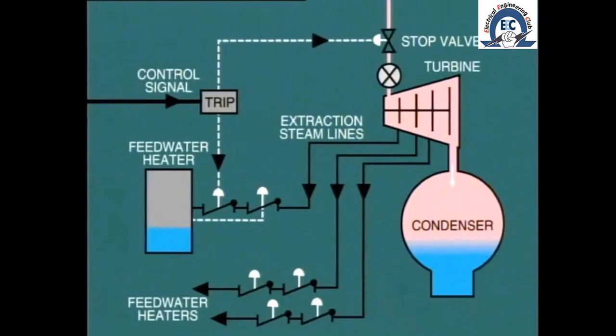A similar problem can occur with entrained steam feeding back into the turbine from extraction lines. To prevent this, positive-closing non-return valves are installed and arranged to close when the turbine is tripped. The valves are actuated pneumatically but are controlled by a hydraulic trip relay.